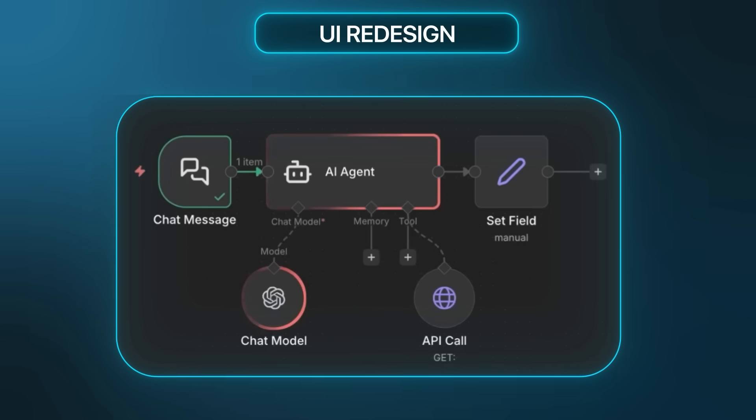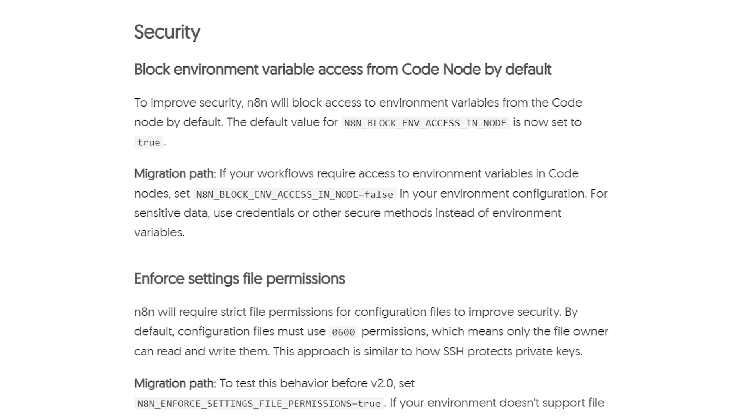For business owners using N8N to automate your own operations: upgrade — it's pretty straightforward. You'll get a cleaner interface, better security, and the ability to build more complex workflows if you need them. The learning curve is minimal because the core platform hasn't changed. The main thing to watch out for is those breaking changes with the error triggers, so test your mission-critical workflows after upgrading to make sure they still behave as expected.